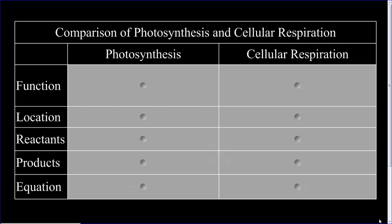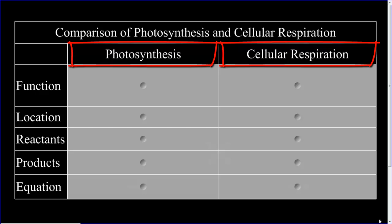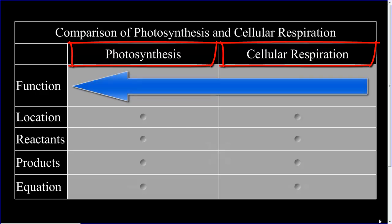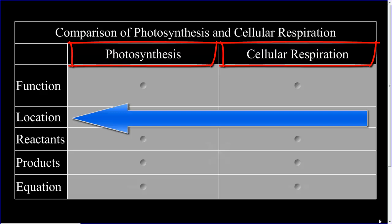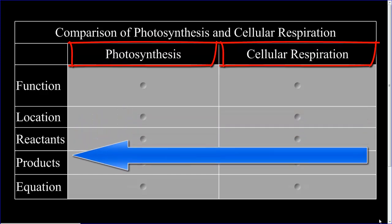I have a table here with two columns, one for photosynthesis and one for cellular respiration. Each column is broken into the function, the location, the reactants, the products,